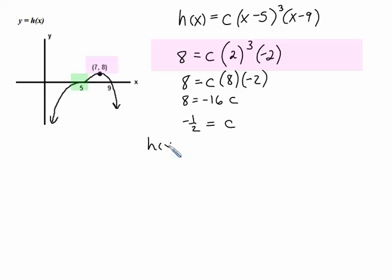So the factored form for the equation of this graph will be that h of x is equal to a negative one-half times the quantity x minus five squared times the quantity x minus nine. That is the factored form, and that's one part of what we want to do.